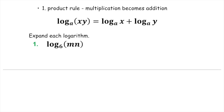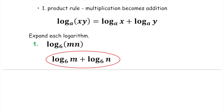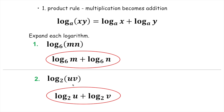Let's look at an example. This one is a log with a base of six, so we're going to break this apart into two separate logs — both with base six — and just throw an addition sign in between them. This is going to turn into log base six of m plus log base six of n. This is the condensed version; this is the expanded version. This becomes important later on when we're solving equations. Similarly, for log base two of u times v, we get log base two of u plus log base two of v — multiplication becomes addition.